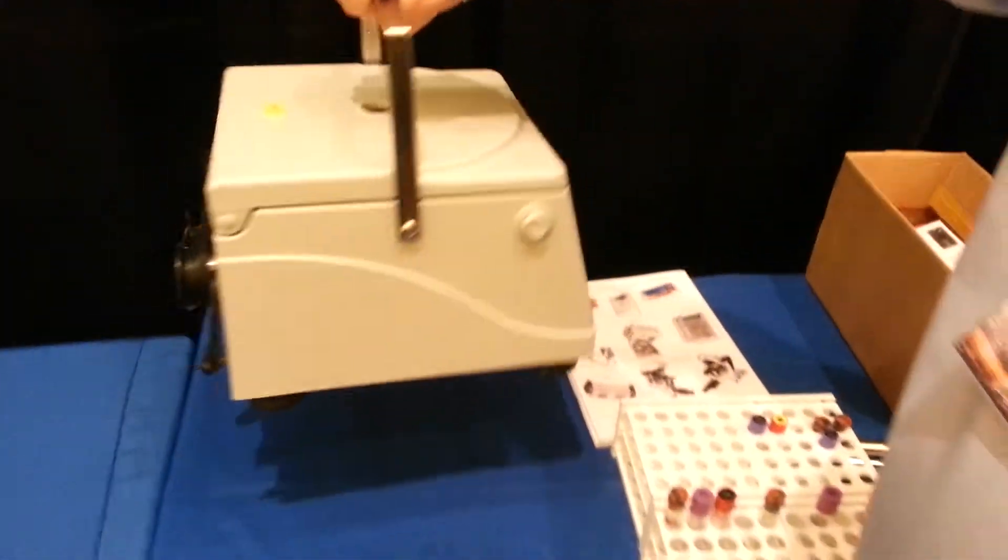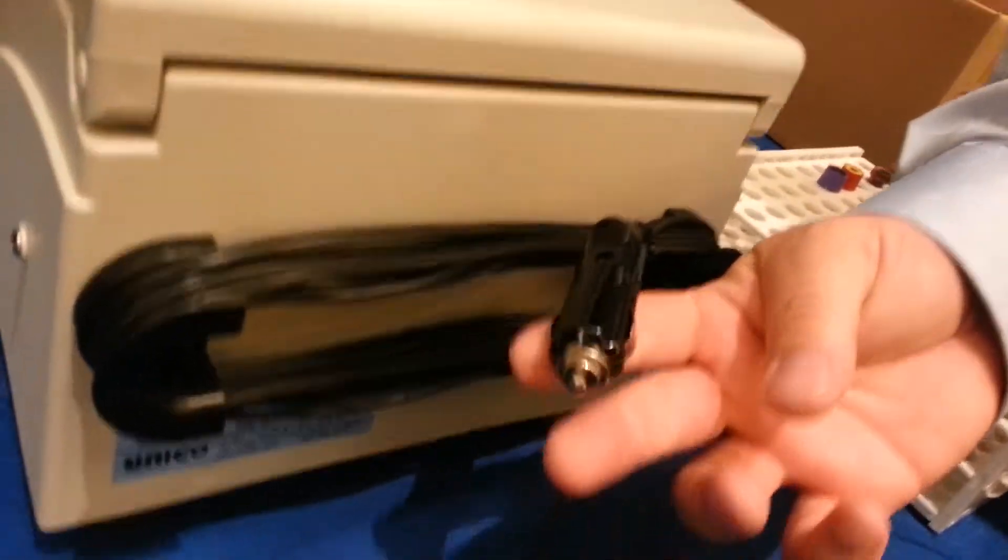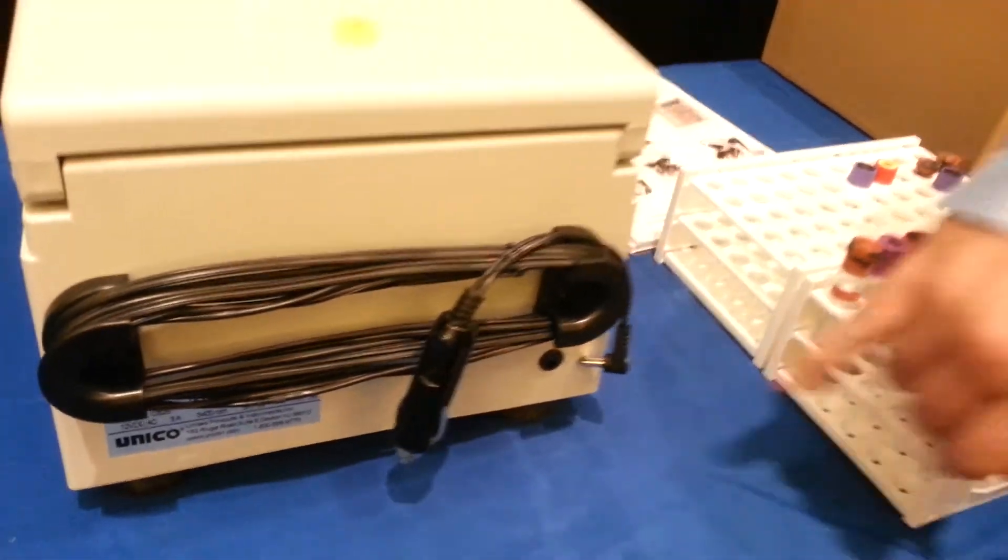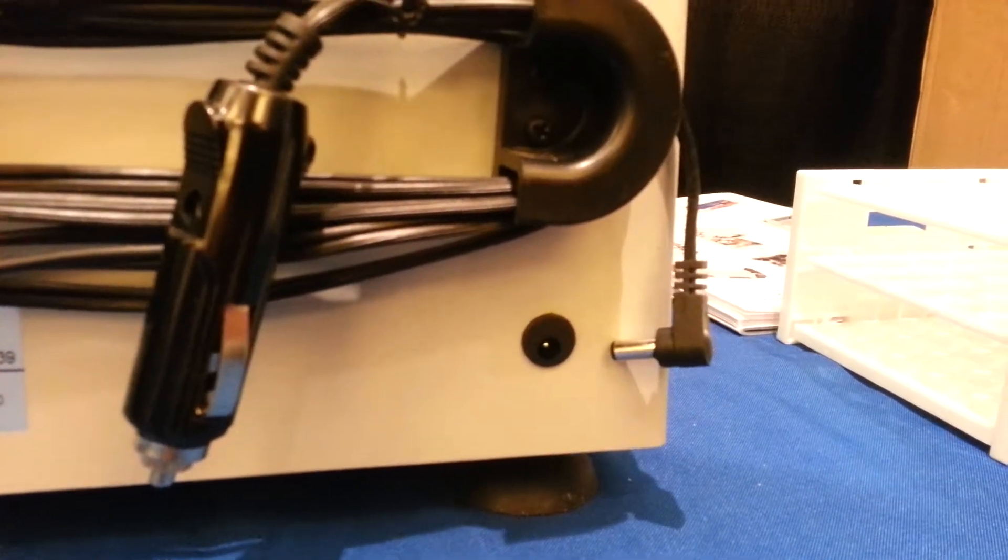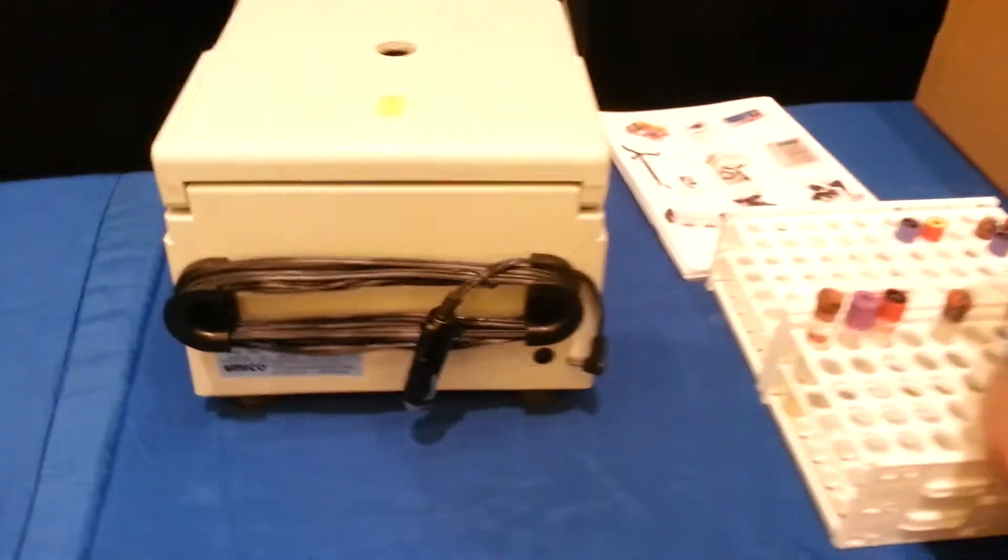We're going to turn it around and look at the back. It's got a nine-foot cord with a 12-volt cigarette lighter adapter. If you look back here, that's where this plugs in. You can also put an optional AC adapter on the unit, so you can plug it into the wall when you take it back to the lab.